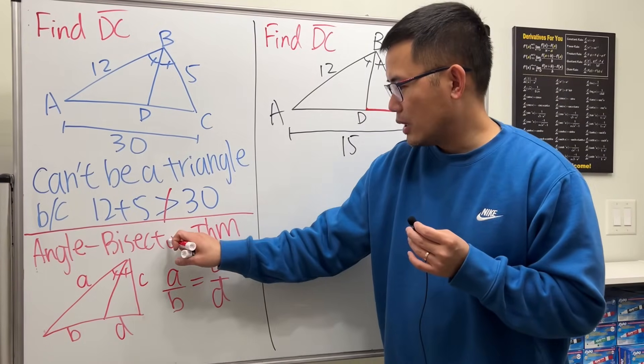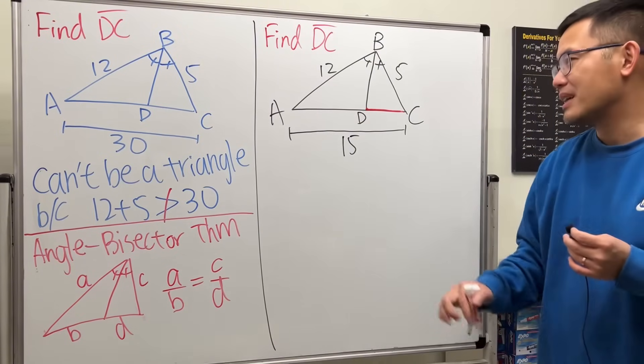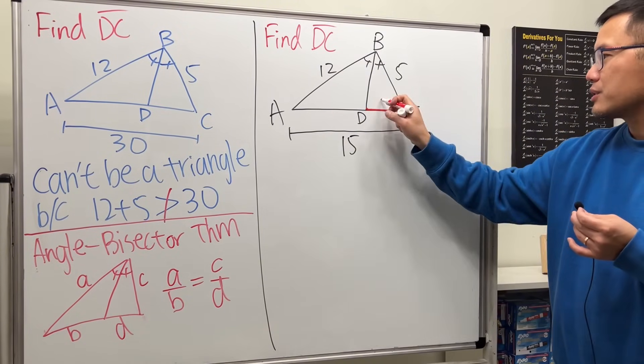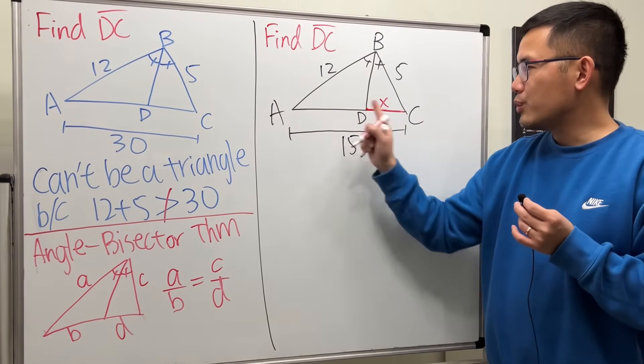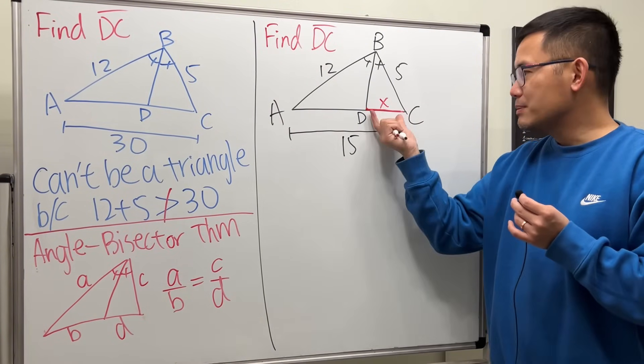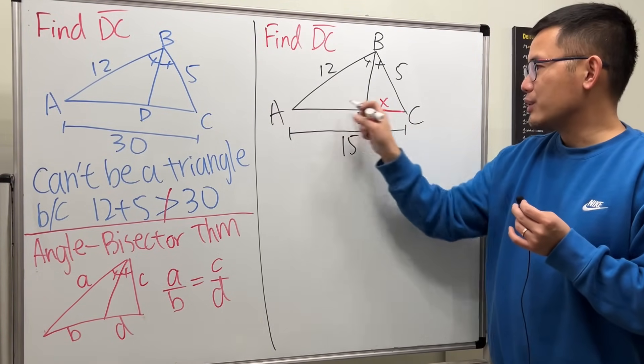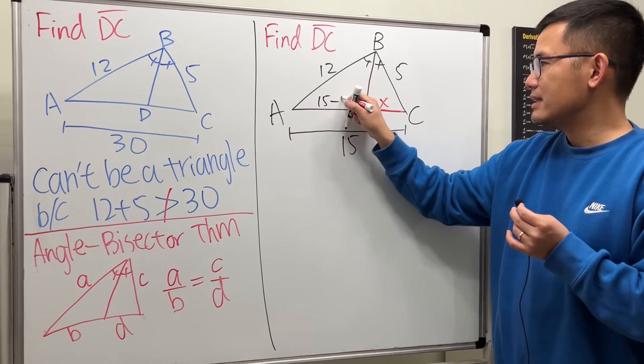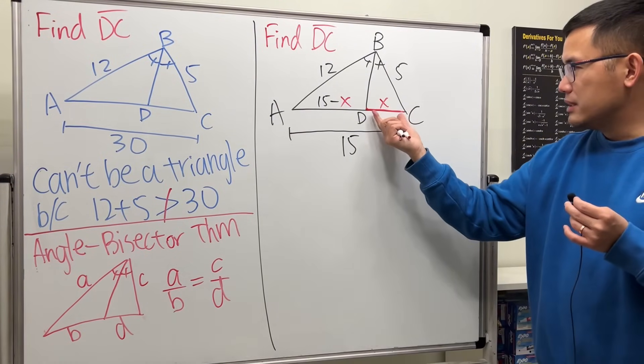I don't know how long this is, let's just call it x. And because the whole thing from here to here is 15, this much is x already, so from here to here must be 15 minus x.